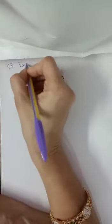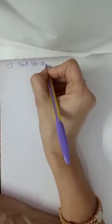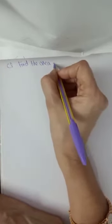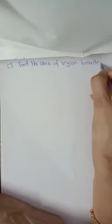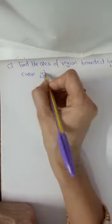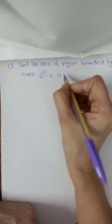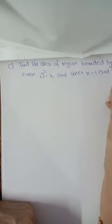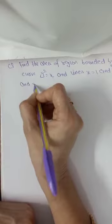Now let's start with the first type. Find the area of the region bounded by curve y square equals to x and lines x equals to 1 and x equals to 4 and x-axis.